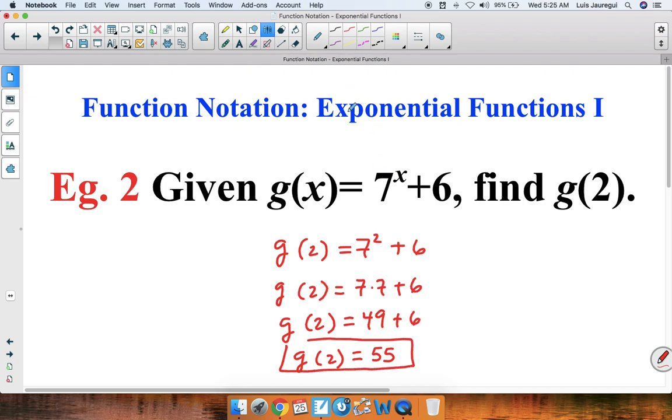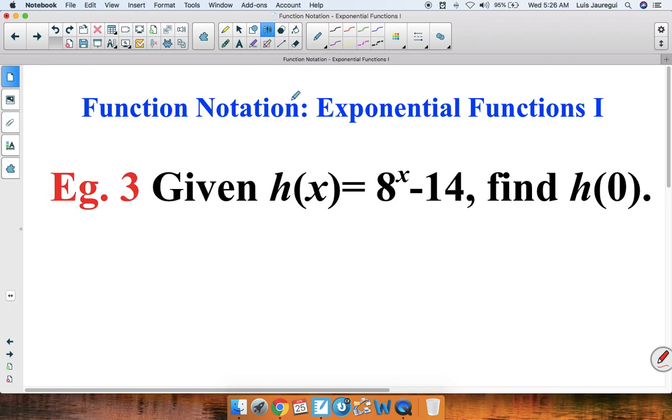Let's take a look at our last example in this video. Example 3. Given h(x) = 8^x - 14, find h(0). So once again, let's substitute in 0 for x.